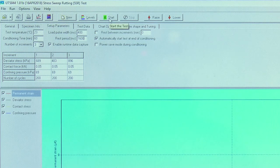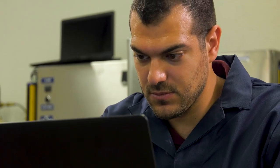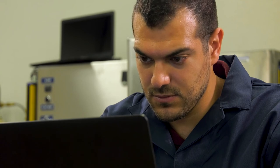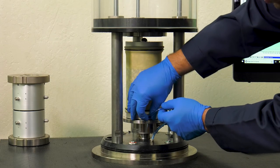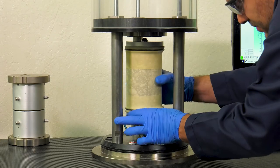When the test is complete, verify that all the data has been collected. Open the AMPT conditioning chamber, disconnect the drainage line, and remove the tested specimen assembly.